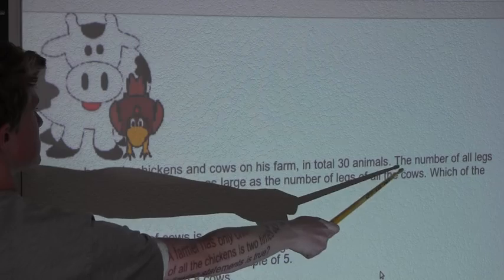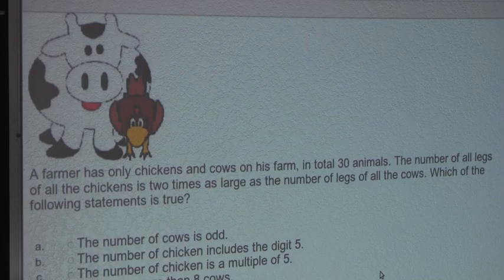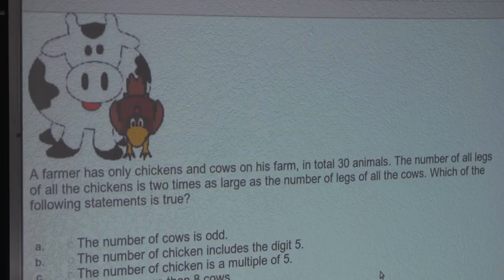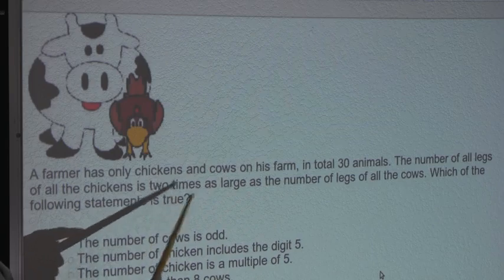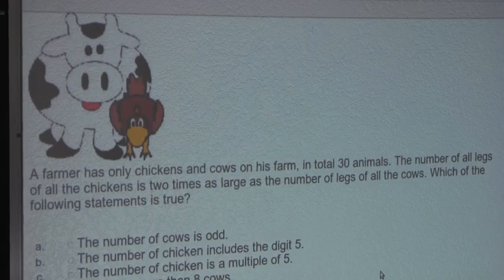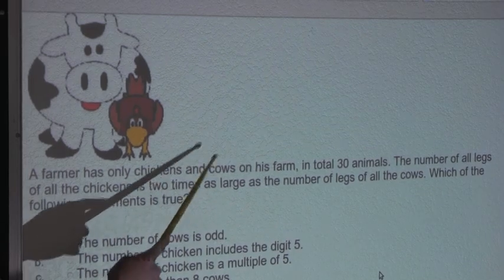So let's look at the second sentence. The number of all legs of all the chickens is two times as large as the number of legs of all the cows. And we also know that one chicken has two legs and one cow has four legs. So to obtain the same number of chicken legs as cow legs, we would have to double the number of chickens. But now it says we want even two times as many chicken legs as cow legs. So we would have to double the number of chickens again. So we would have two times two equals four. So we know that there must be four times as many chickens as cows.